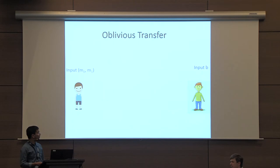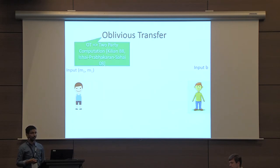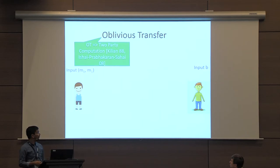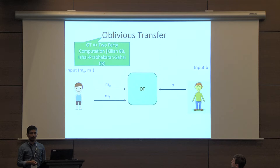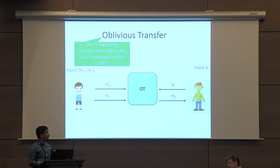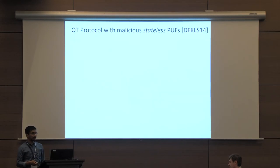Let's review what the oblivious transfer functionality is and why it's important. If you can securely realize oblivious transfer, it's enough to securely realize any two-party computational functionality — shown by Kilian and later by Ishai, Prabhakaran, and Sahai. In oblivious transfer, a sender has two inputs M0 and M1, and a receiver has input B. At the end, the receiver learns M_B, the sender has no output, the receiver should not learn the other message, and the sender should not learn the receiver's choice bit B.